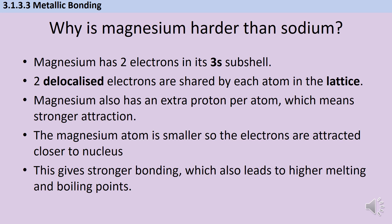Magnesium also has 1 more proton per atom compared to sodium because it has 12 rather than 11. And that's also going to mean a stronger attraction between that positive ion and the electrons that have been delocalised. The magnesium atom is actually going to be a little bit smaller because that stronger nuclear charge is going to pull the electrons in ever so slightly closer, so the atomic radius of magnesium will be smaller too. Overall, we're going to have stronger bonding, and because there's stronger bonding, there's a higher melting point and a higher boiling point. And overall, that's just going to make the magnesium harder.